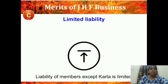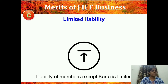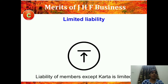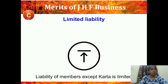The third merit is limited liability. The liability of the partners is limited, but that of the Kartha is unlimited. In sole proprietorship everyone had unlimited liability, but here as a member you have limited liability. Their liabilities are limited to the extent they are working for, and the Kartha has unlimited liability as the ultimate head.